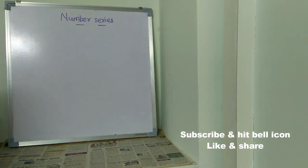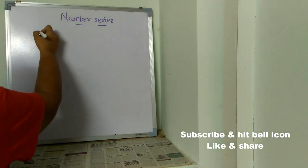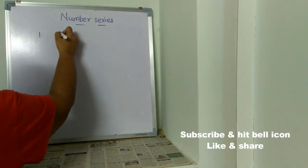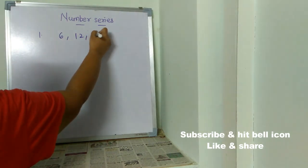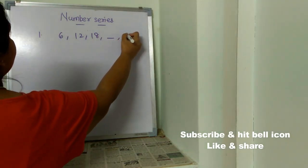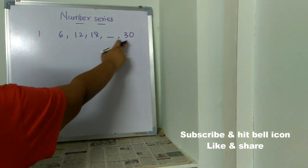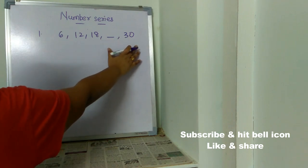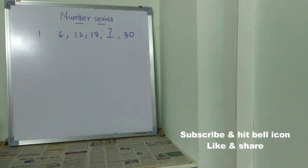Now let's start solving problems from the basic level so we can understand them better. The first question is: 6, 12, 18, _, 30. They gave you four numbers and are asking what number comes in the missing place. This is a very basic level problem.